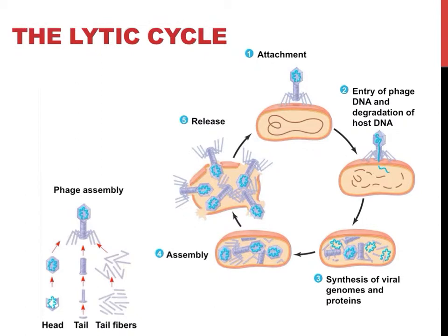There are two primary viral cycles or patterns in which infection can occur. The lytic cycle is called the virulent cycle because it causes disease. In this cycle, exhibited on this slide, viruses inject their DNA or RNA into a host cell.